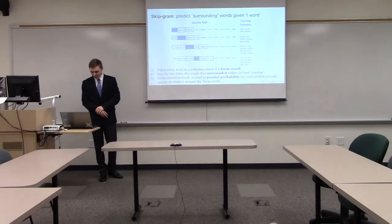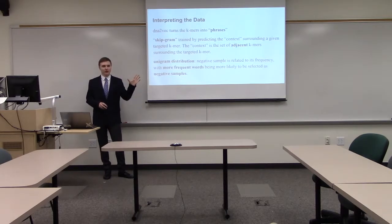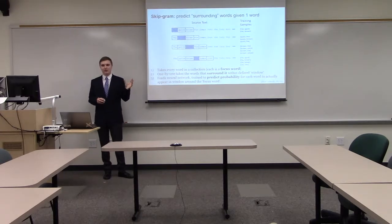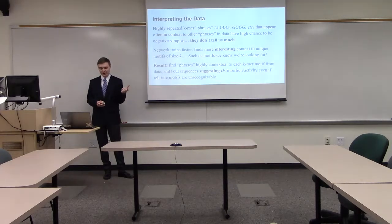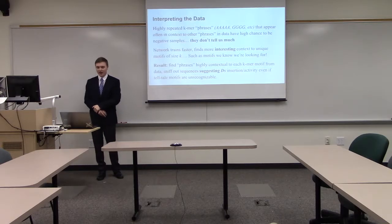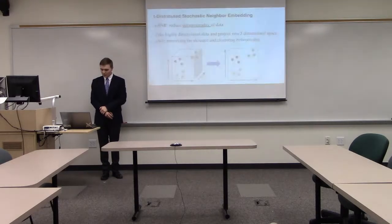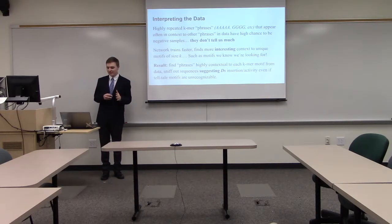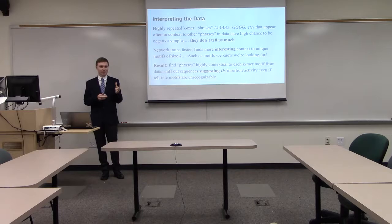Part of the reason why this is effective is that words highly seen around context — especially long, useless repeats in the genome — get filtered out because they're seen so much; they're a negative selection. Imagine you see the word 'the' a million times around different nouns — it doesn't tell you much about the noun, so it's filtered out. The same way with large repeats: they get filtered out because they don't tell you much. The network trains faster and finds interesting context for the motifs of size K that we're looking for.